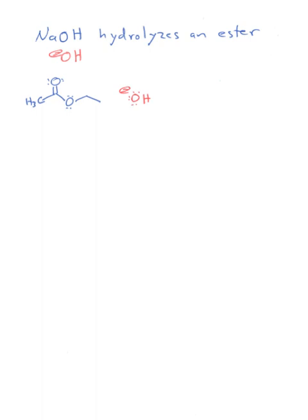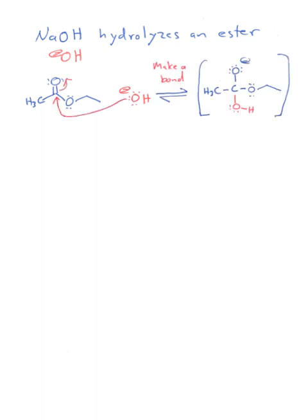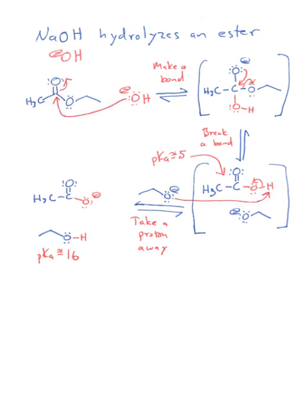Sodium hydroxide hydrolyzes an ester. The hydroxide attacks the ester to make an intermediate. We then break a bond to give a carboxylic acid and the alkoxide that is left as a leaving group. The pKa of that carboxylic acid is around 5, so alkoxide in solution will easily deprotonate that to generate our carboxylate product along with our protonated alcohol.